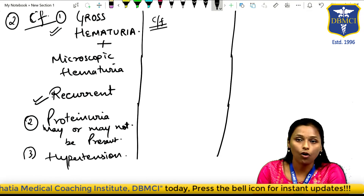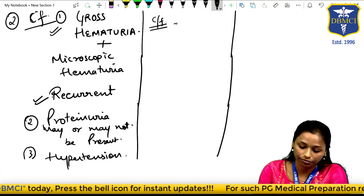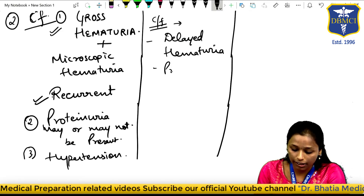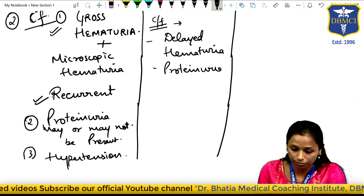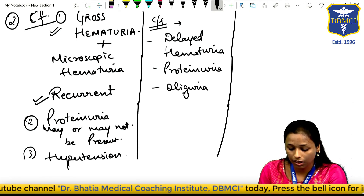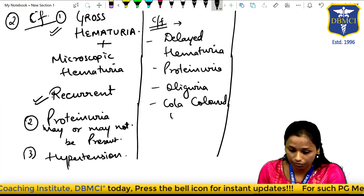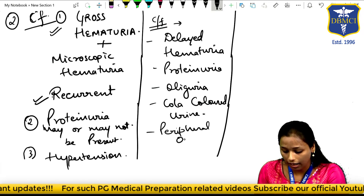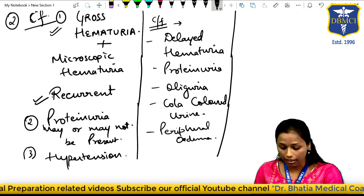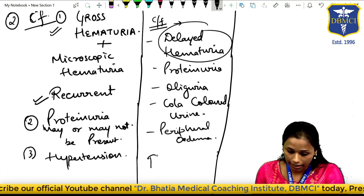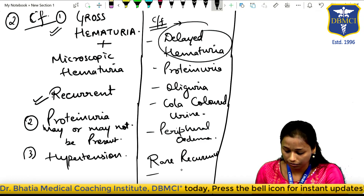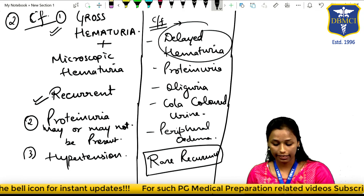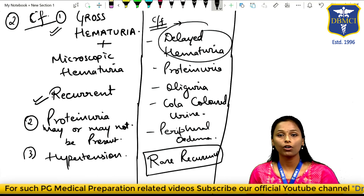Clinical features of post-streptococcal glomerulonephritis: There is delayed hematuria with proteinuria. The patient may have oliguria and cola-colored urine. Due to oliguria there is fluid retention, so peripheral edema or orbital edema may be seen. Importantly, recurrence of hematuria is rare in PSGN — unlike IgA nephropathy where recurrence is common. The reason recurrence is rare is that PSGN confers lifelong immunity to the patient.